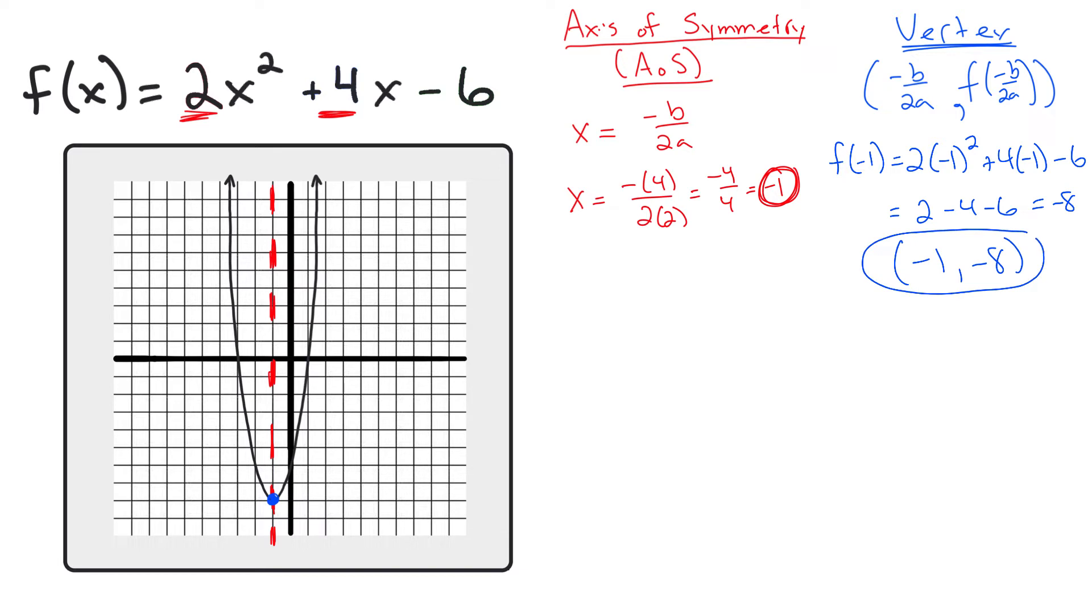So my coordinate is negative 1 comma negative 8. That is the location of the vertex. Left 1 down 8. And that takes me right here, which matches with the graph.